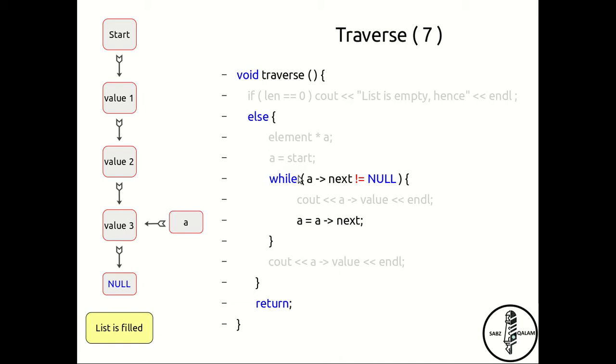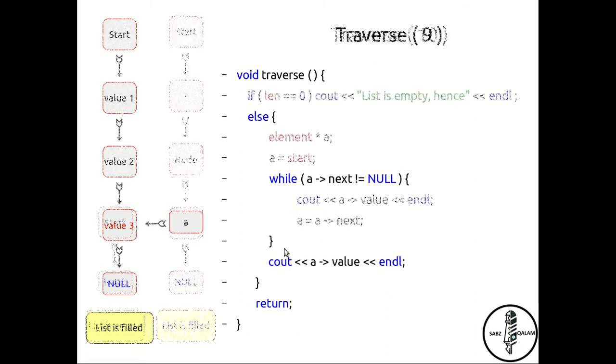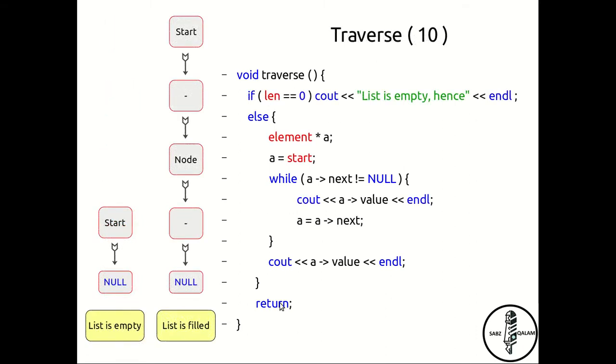You've printed all the elements that came before, the values within those elements you've already printed, but you haven't printed the value of the last element. So once you exit the while loop, you do need a statement here, and this actually helps you print the value three, which now is shown in red. This gives us the entire function again.